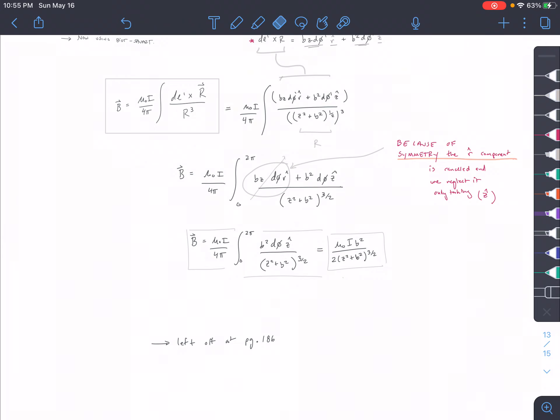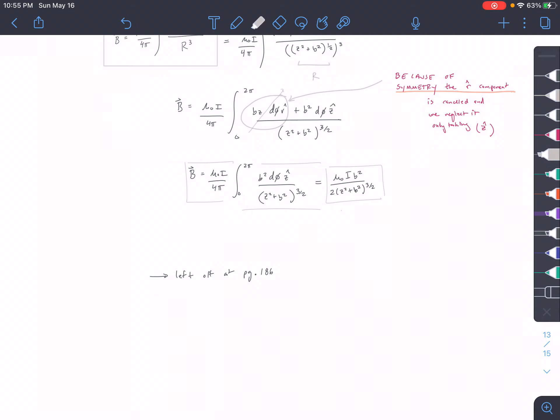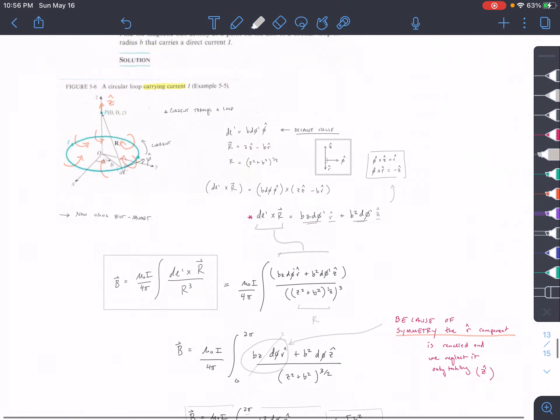Okay, so we're taking what's left here in the Z-hat direction, and then we are integrating from 0 to 2 pi, because we have a full circle, and our differential piece is d-phi. And then as we integrate, we're just basically multiplying the whole thing by 2 pi, and then it simplifies kind of nicely here, and that gives us our resulting B-field.